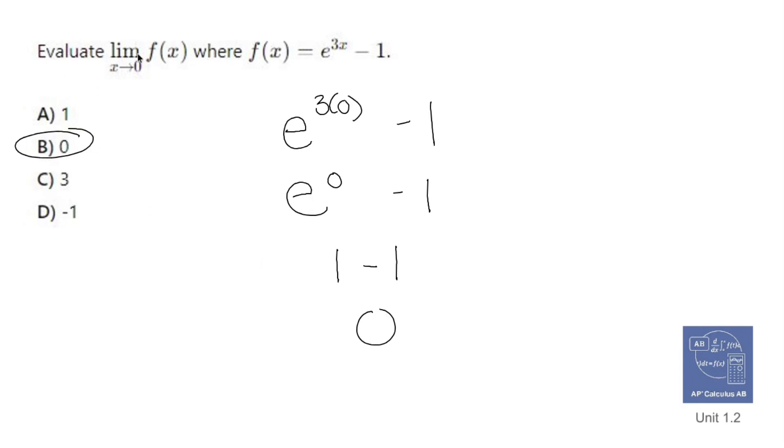So in this case, evaluating a limit is something simple as substituting it in, making sure that there's no weird stuff happening, and since there isn't, we're done. We're good.